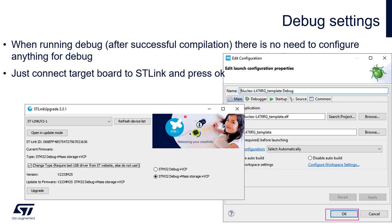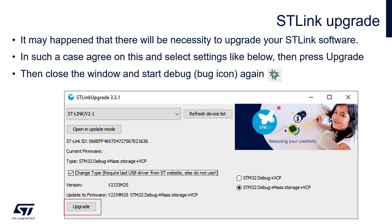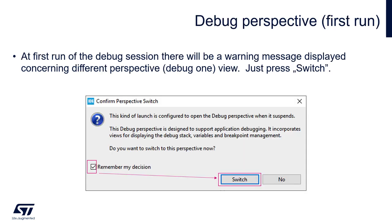When running a debug session after successful compilation, there is no need to configure anything for debug in this project. Just connect the target board to ST-Link and press OK. It may happen that the ST-Link firmware on your board is not up to date. In this case the ST-Link upgrade tool will run automatically. Please open update mode, select 'Change Type', check the checkbox if present, and press the Upgrade button. After this operation you can start the debug session again.